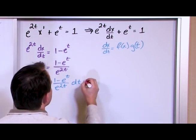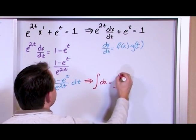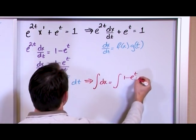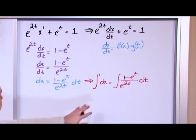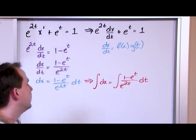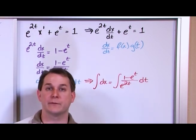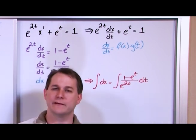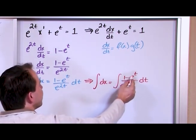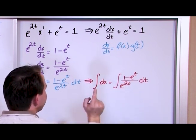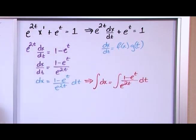So let's move dt over: dx equals (1 minus e^t) / e^(2t) times dt. We're in good shape to integrate. Placing integral signs on both sides: integral of dx equals integral of (1 minus e^t) / e^(2t) dt.